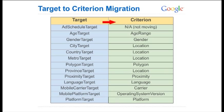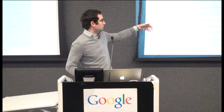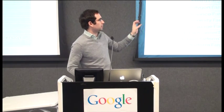Here's a quick mapping. Looking at the way things were previously, the ad schedule target, the country target, mobile platform target — we move them into this criteria categorization. For the most part it's a one-to-one mapping, with the exception of geo targeting where city, country, metro, province, etc. all get moved into the same location criterion type.